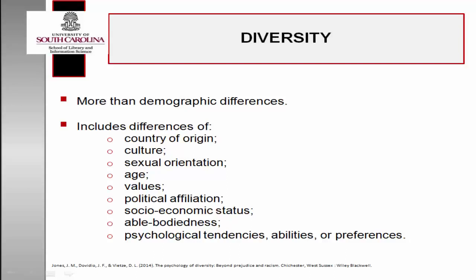James M. Jones, director of the Center for the Study of Diversity at the University of Delaware, referred to diversity as more than demographic differences. He defined diversity as differences by virtue of country of origin, culture, sexual orientation, age, values, political affiliation, socioeconomic status, able-bodiedness, and psychological tendencies, abilities, or preferences.